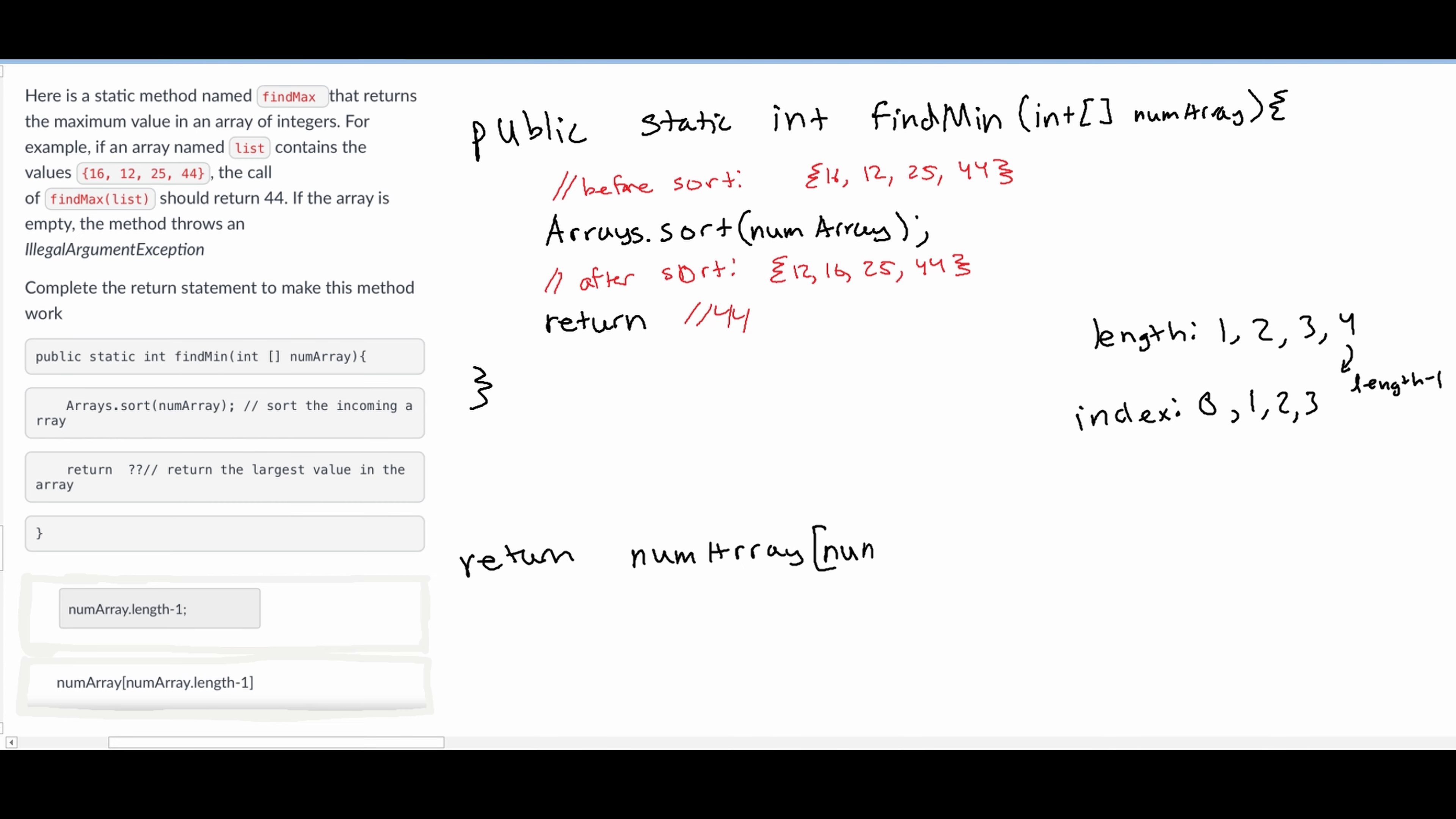So in here we're going to get the length of our array. We're going to do numArray.length. This is going to give us a value of 4, and then we're going to do minus 1. So this is then going to give us the value of 3, which is this index.